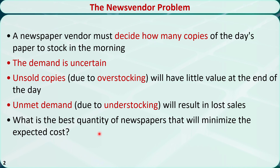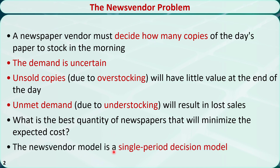The news vendor model is also commonly seen in many other applications that have nothing to do with newspaper. The key characteristic of this type of problems is that they involve a penalty or cost for both overstocking and understocking because the demand is uncertain. Since the decision is made only once, the news vendor model is a single period decision model.